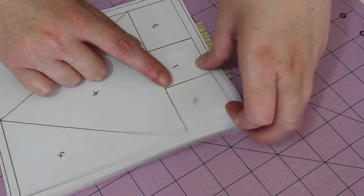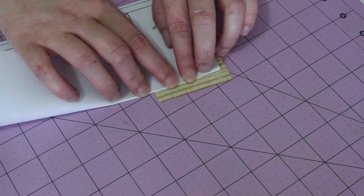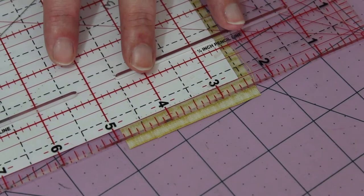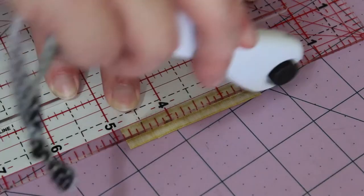Next, flip the pattern over and fold down the section two line. Grab a ruler and place the quarter inch line along the edge of the pattern, cutting off any excess fabric.